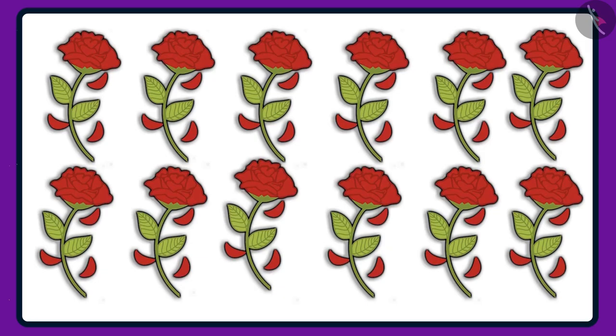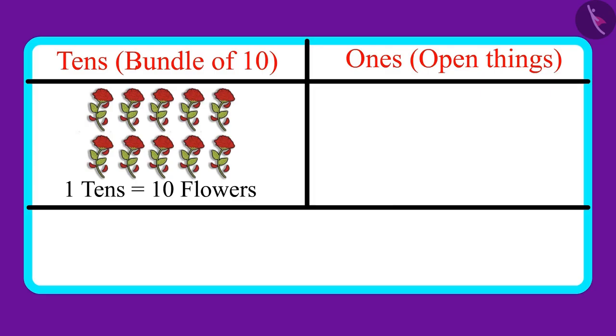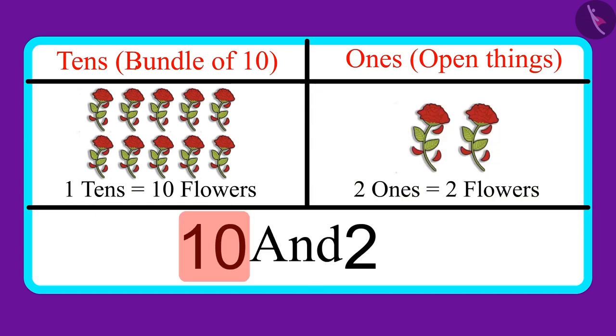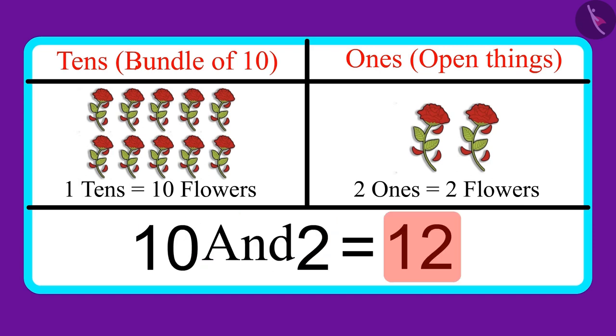Come on, let's look at another similar example. Here are some flowers. There are one tens and two ones in that number. Can you tell me how many flowers are these? One tens means ten flowers and two ones means two flowers. Ten and two, which means these are twelve flowers.